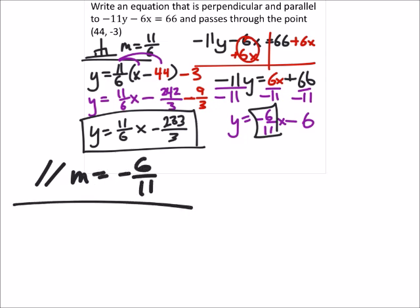And so we're going to use point slope form again. Y equals the slope, negative 6 11ths, times x minus 44. That minus should be black right there. And then minus 3.